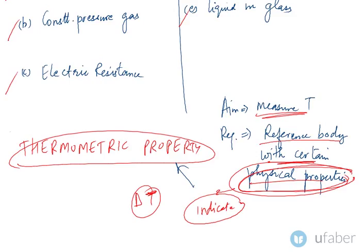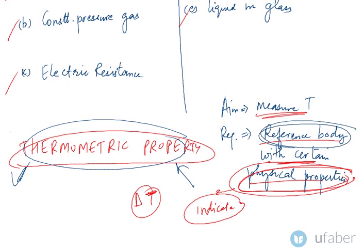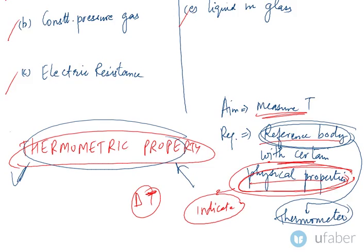A very common thermometric property is the resistance of a conductor. If the temperature goes up, the resistance changes; if the temperature goes down, the resistance changes again. So the change in resistance of a conductor is a thermometric property which indicates a change in the temperature of the conductor. This reference body is very commonly called a thermometer.